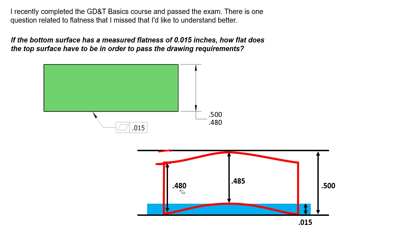So at the end of the day, we can have 20 thousandths of flatness error on that top surface due to the requirements that we see on this drawing. However, this question is a little bit misleading, because we say that it has 15 thousandths and it makes you think that the measured flatness of the bottom surface has some sort of effect on how much flatness we can have on the top surface, and that's just not true.